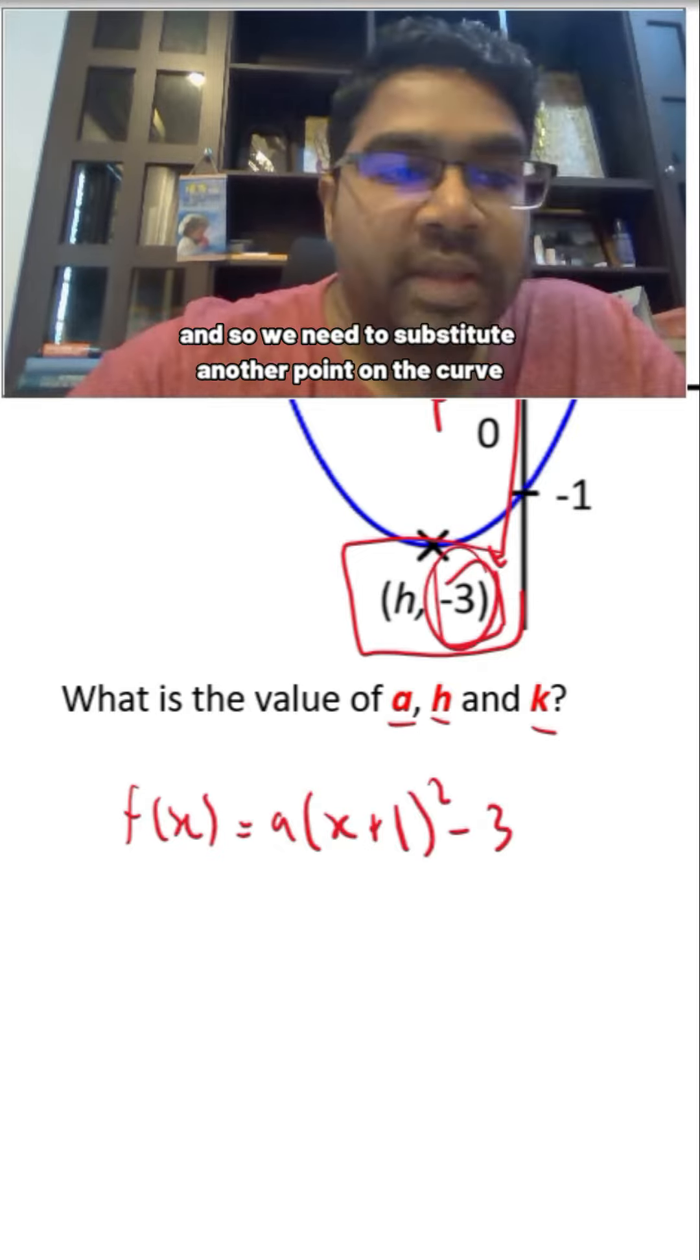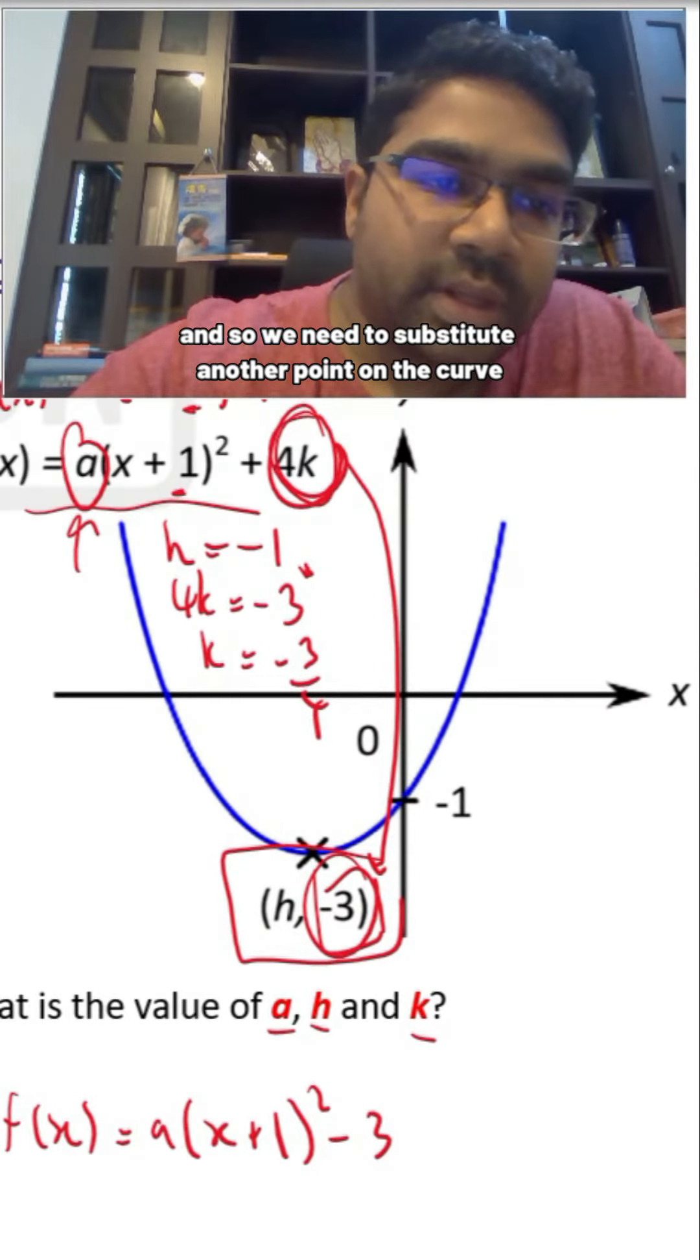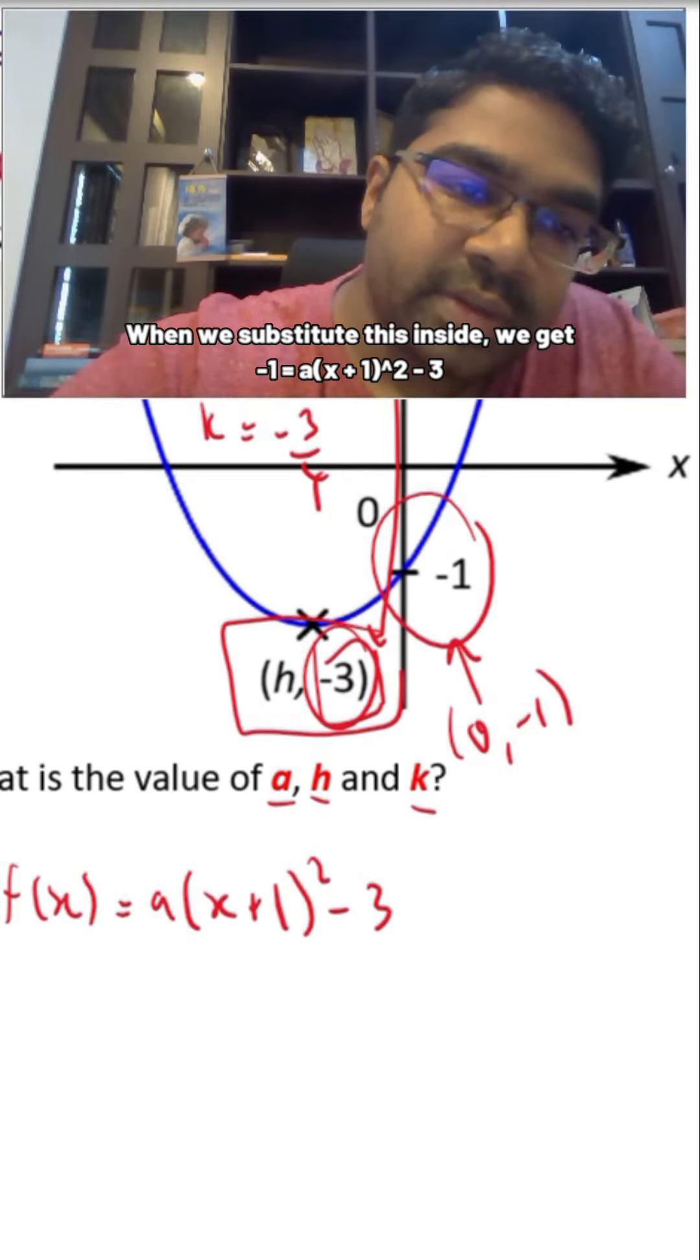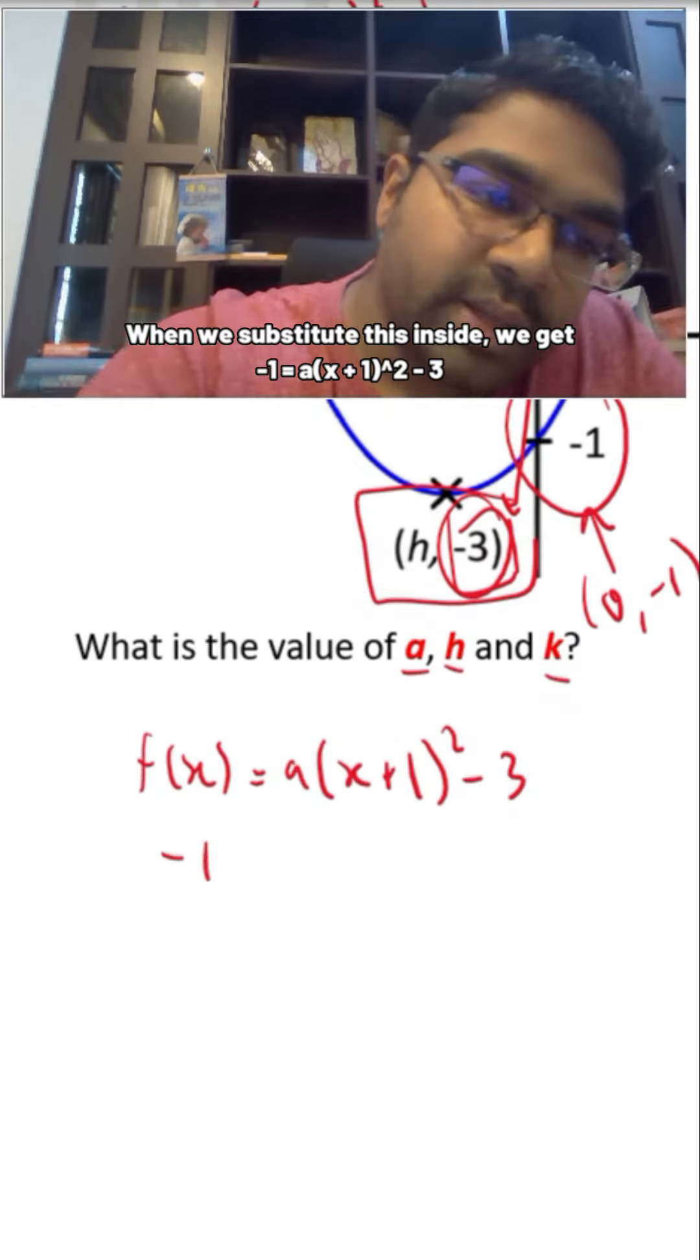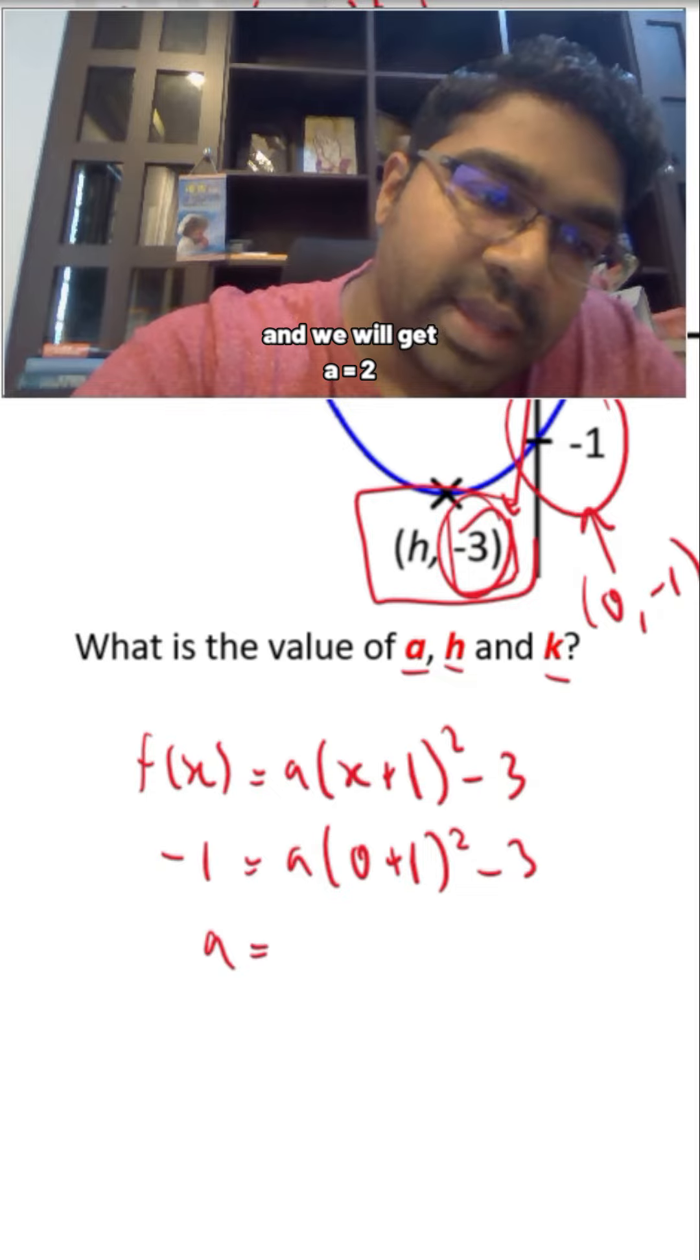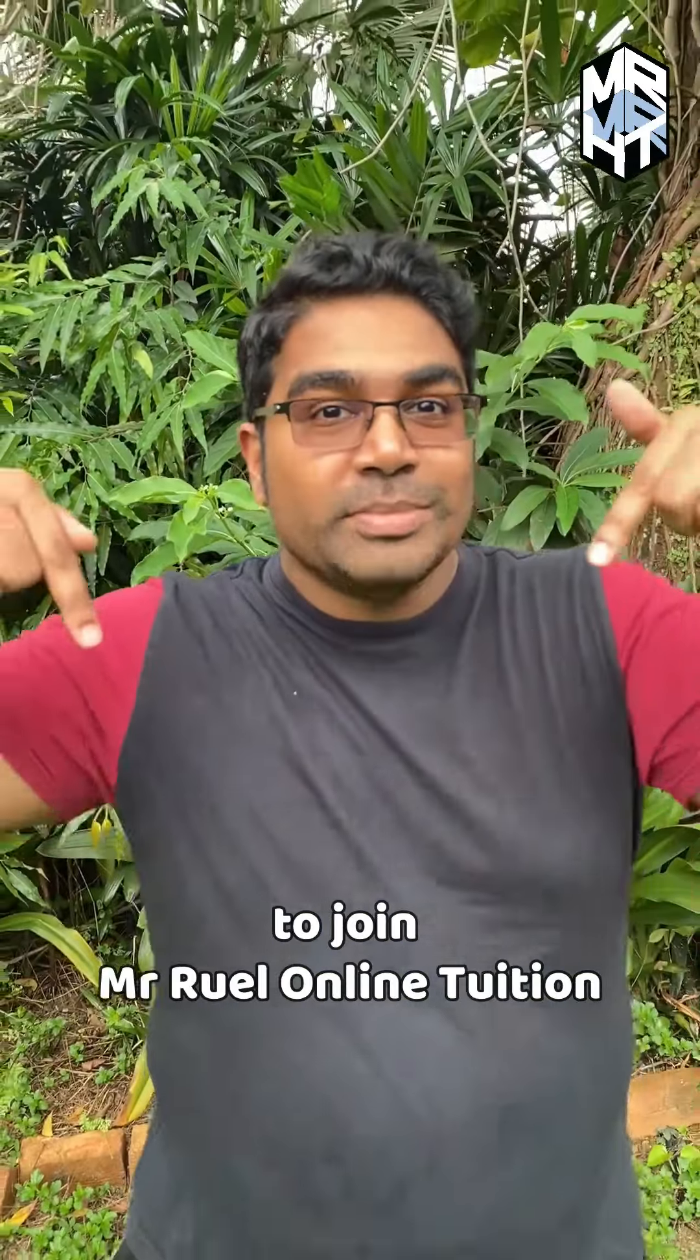negative 3. We need to substitute another point on the curve. The question has given us this point, which is (0, negative 1). When we substitute this inside, we get negative 1 equals a(0 plus 1) squared minus 3, and we will get a is 2.